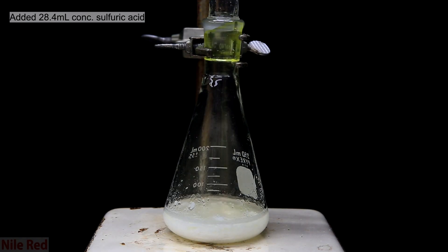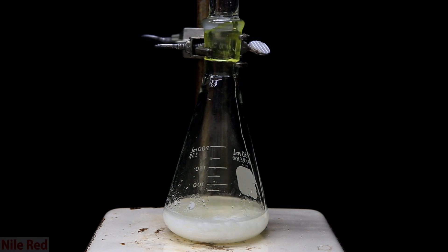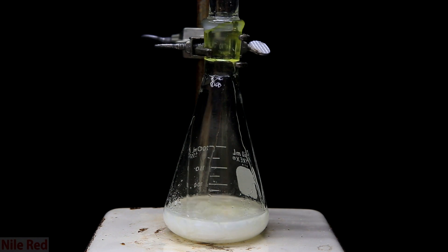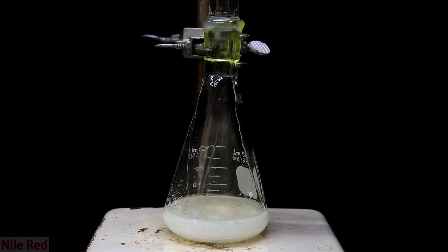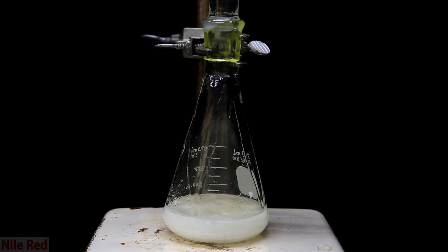Once it's all added, I let it stir for a bit and then I slowly add in 28.4 milliliters of concentrated sulfuric acid. The addition of the sulfuric acid is pretty exothermic, so it should be added as slowly as possible. After it's all been added, the solution at this point should be pretty hot.